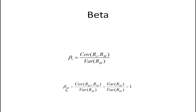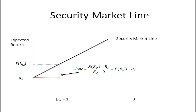It turns out that in the special case of the market itself, beta for the market is the covariance of the market's returns with itself divided by the variance of the market's returns. The covariance of something with itself is just the variance, so these cancel and beta equals 1. So essentially we're creating a measure of systematic risk that is relative to the market, normalized to be 1.